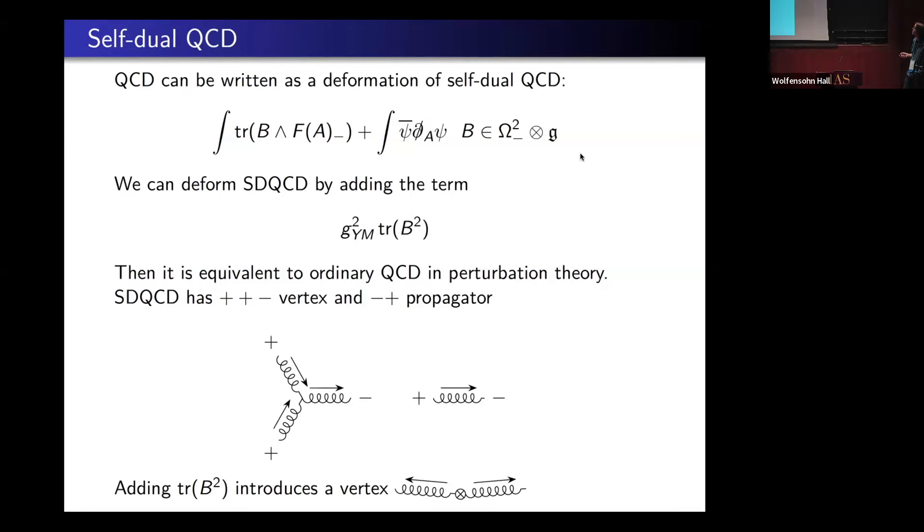I'm interested in doing computations in self-dual QCD in low orders in this perturbation given by this term. Self-dual QCD has a vertex which is plus, plus, minus. We think of B as a negative helicity state and A as positive. I have a plus, plus, minus vertex and a minus, plus propagator.